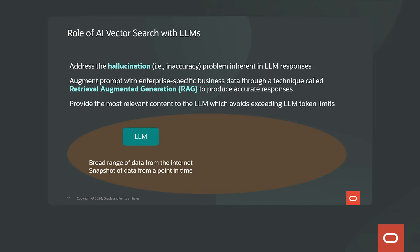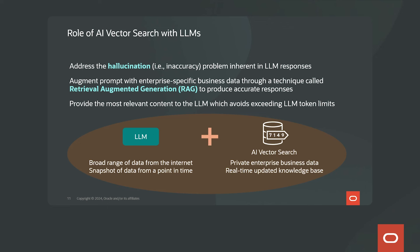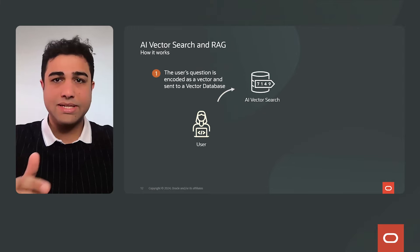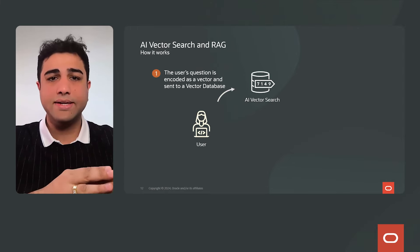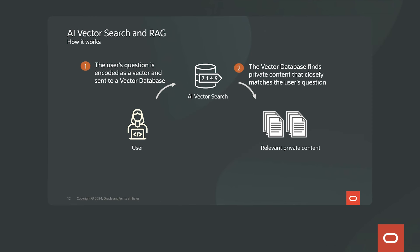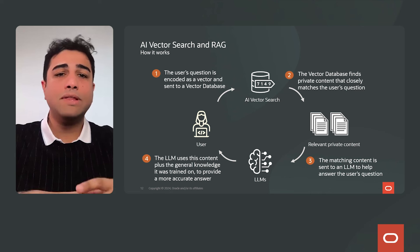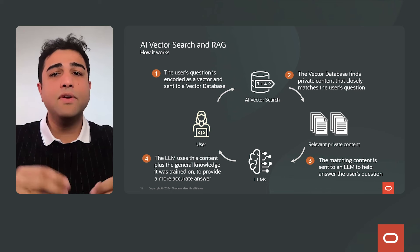On one hand, you have your LLM trained on a broad range of internet data up to a point in time. Adding vector search provides relevant content from your private business enterprise data, giving you better business outcomes. In the RAG flow, your question is first encoded into a vector and sent to AI Vector Search, which searches through your private documents and finds relevant enterprise-specific content. That content, along with the question, is fed to the LLM — that's the augmentation part. The LLM then uses this content along with all of its trained knowledge to give you a much more accurate answer.